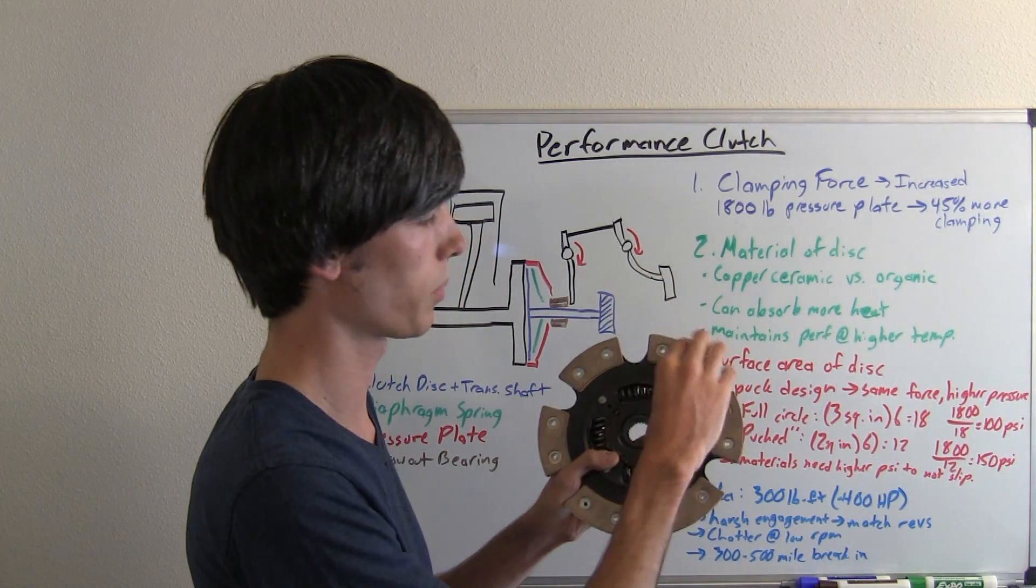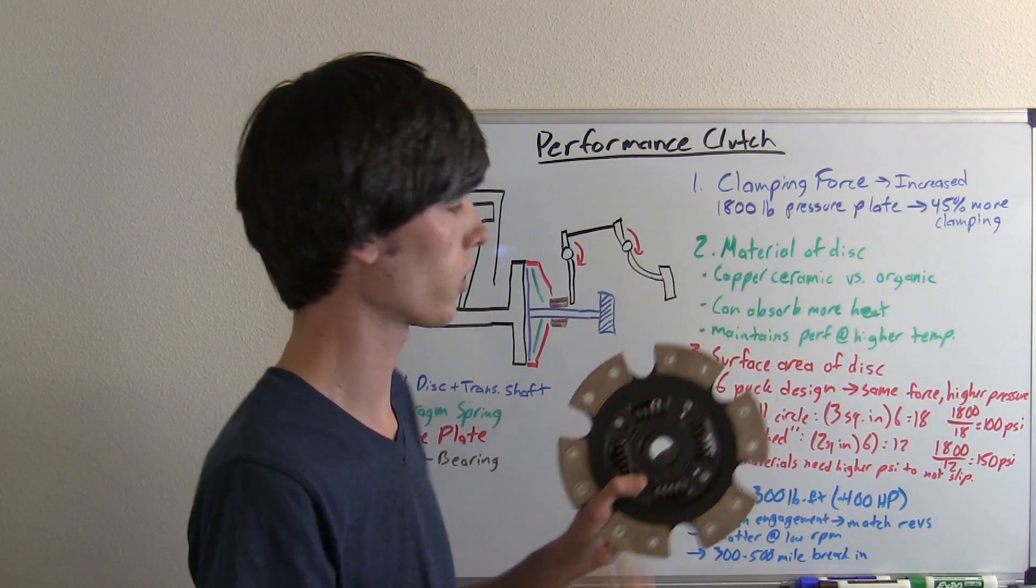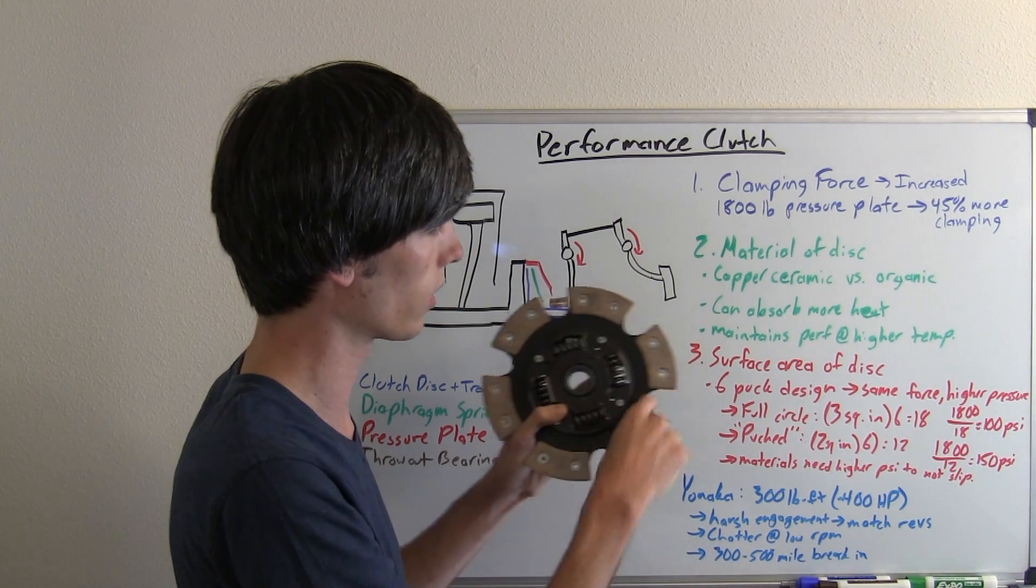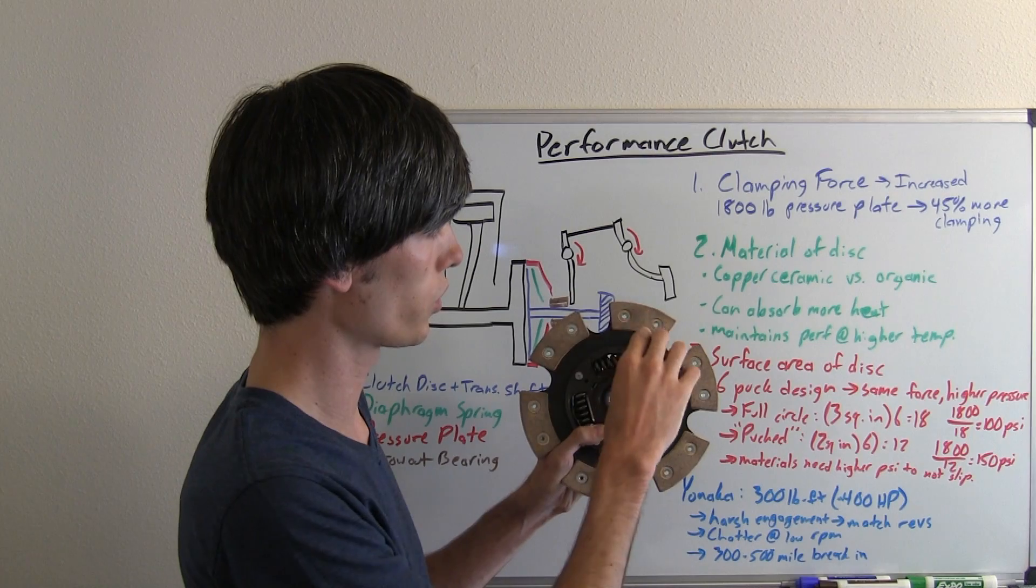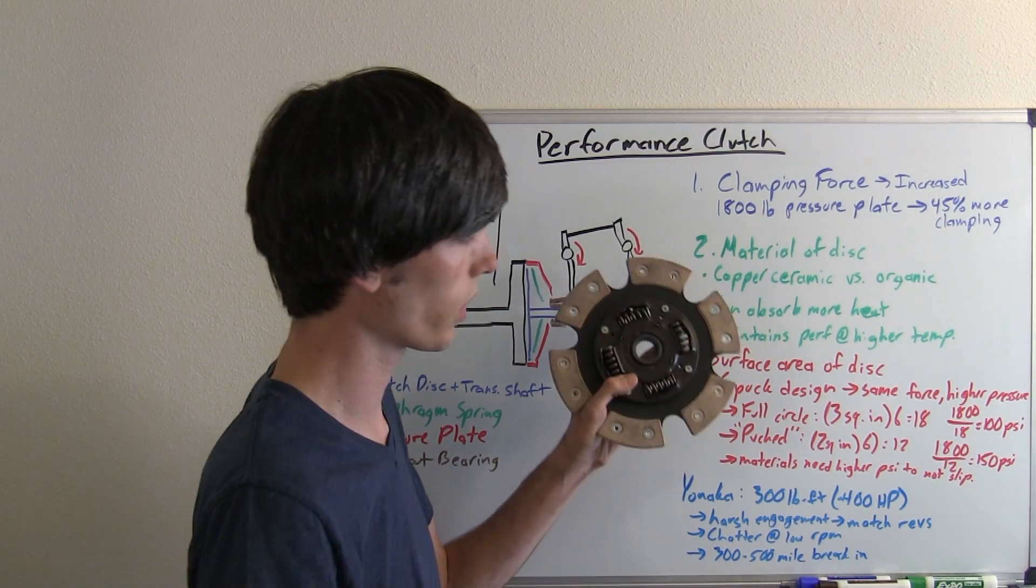So that gives us 100 psi which would be distributed if it were a full circle. Now because they took out these little notches, I'm just going to call that one square inch. So then we've got two square inches for each one of these, so we've got 12 square inches.